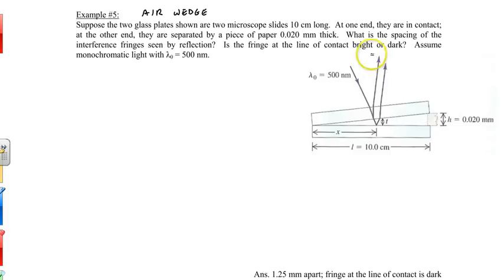We have two rays here, ray one and ray two, that are interfering with each other and producing interference. The questions are: what is the spacing of the interference fringes seen by reflection, and is the fringe at the line of contact going to be a bright band or a dark band?